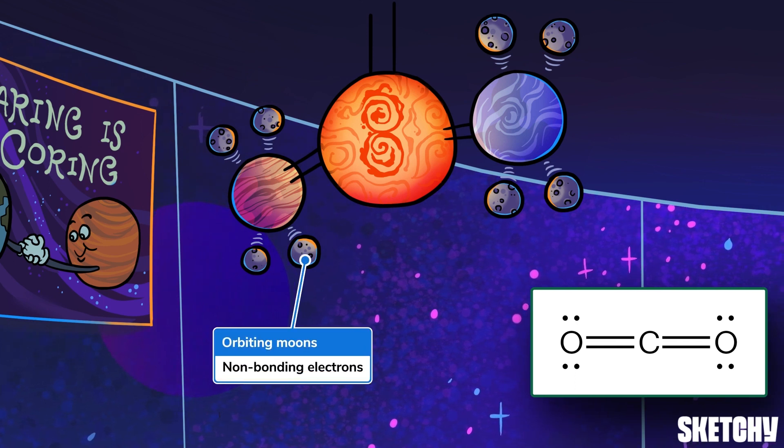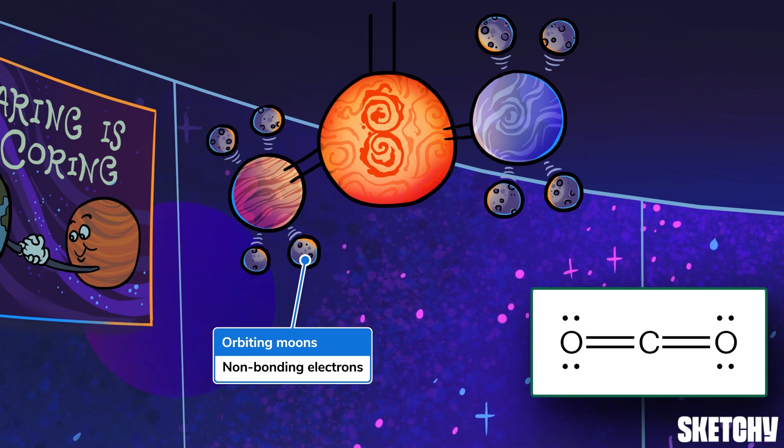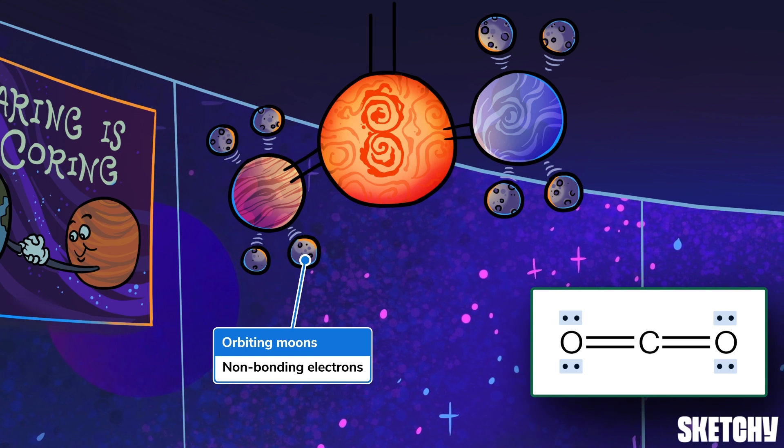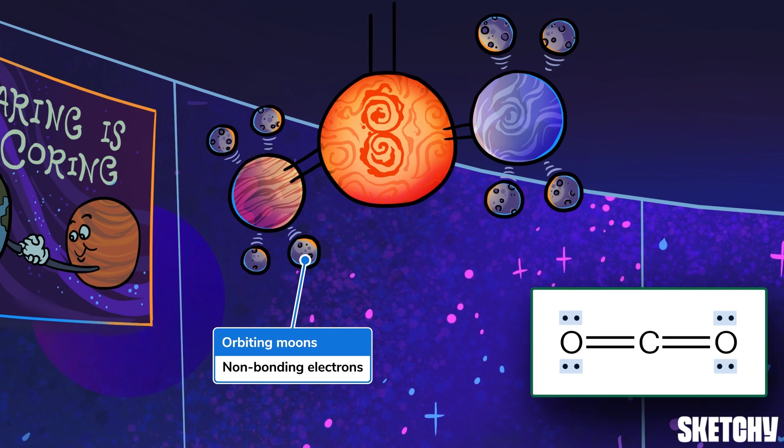These are creatively called non-bonding electrons, and in a Lewis structure, each one is shown with a dot surrounding the symbol for the atom it orbits. We've represented them here with moons that orbit a single planet. These non-bonding electrons are usually found in twos, which are oxymoronically called lone pairs.